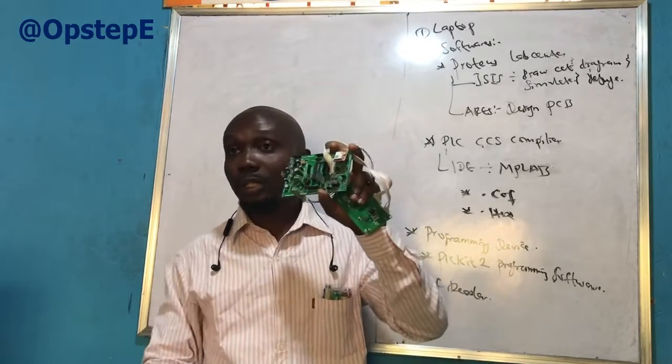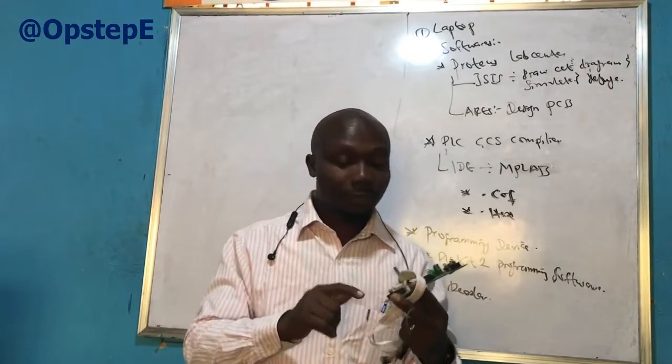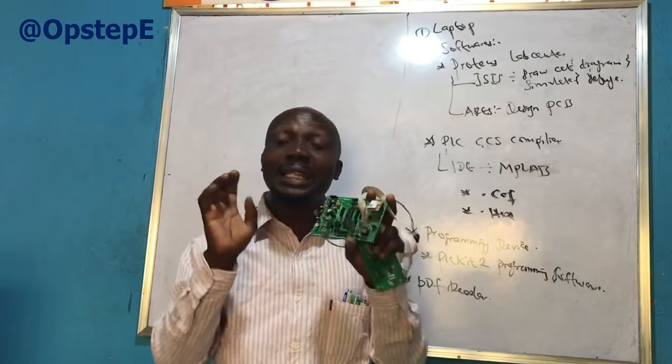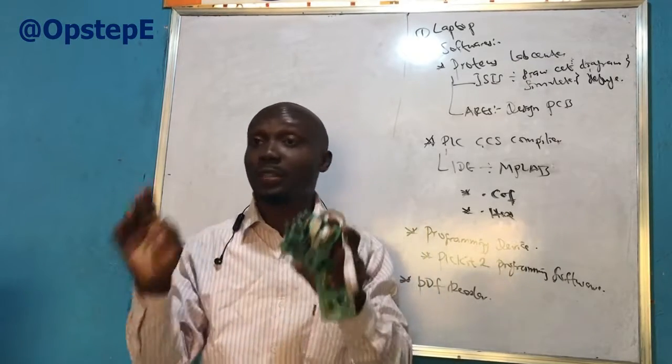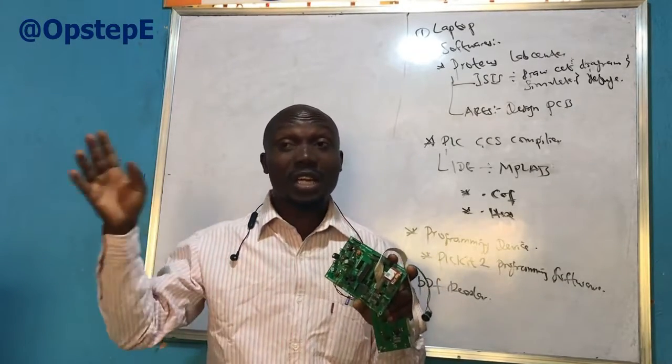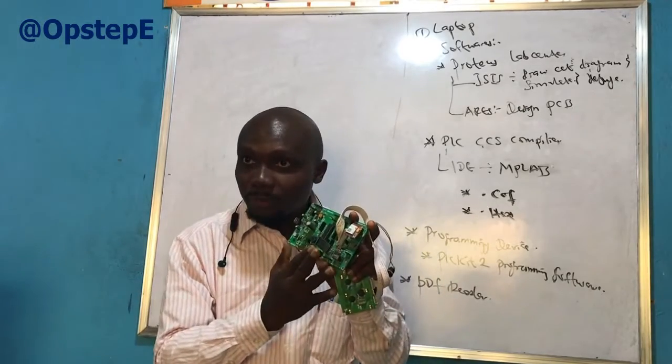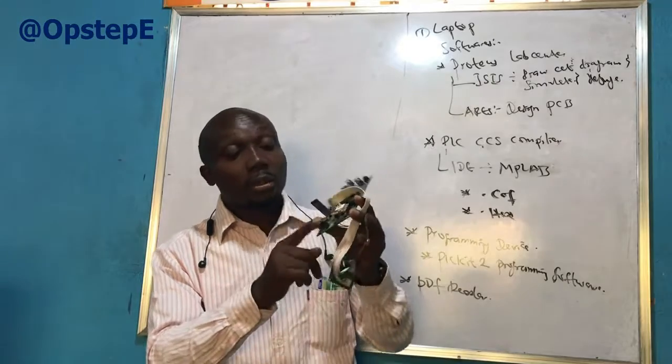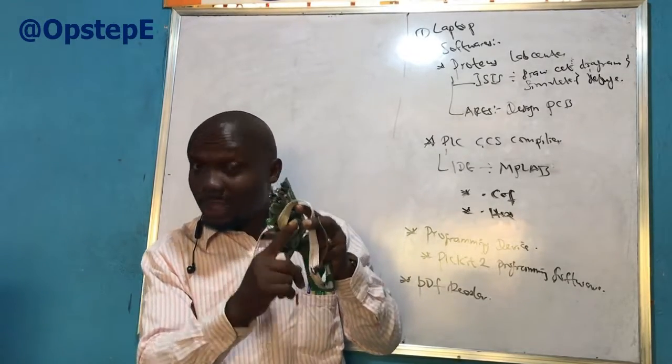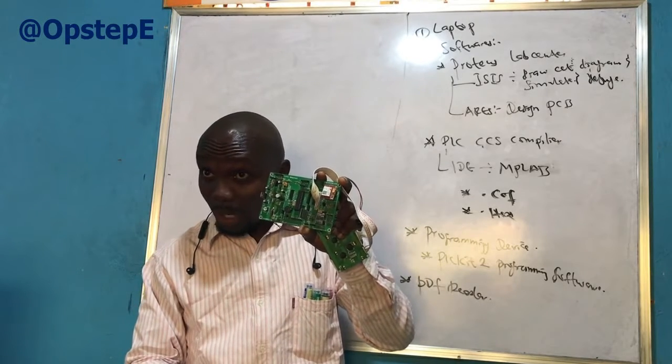With the GSM module you can do anything that has to do with GPS or text message or call related project. This board has a port for it already. All you need to do is buy and attach and then you are good to go. This board can actually serve or accommodate any sensor module or transceiver that uses the universal synchronous and asynchronous receive transmit option.